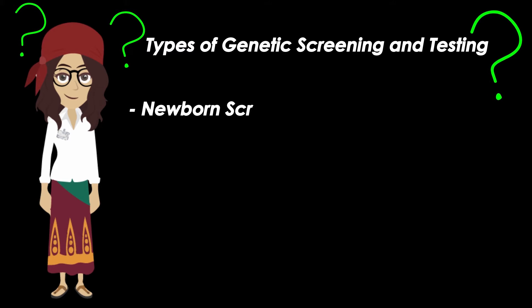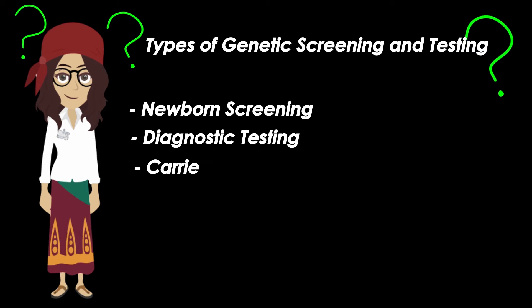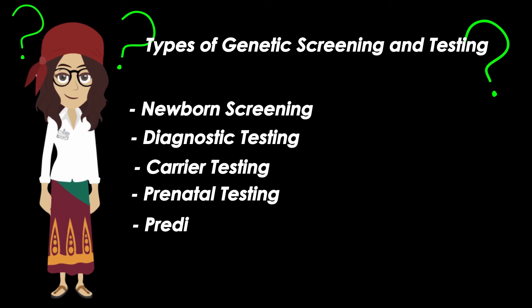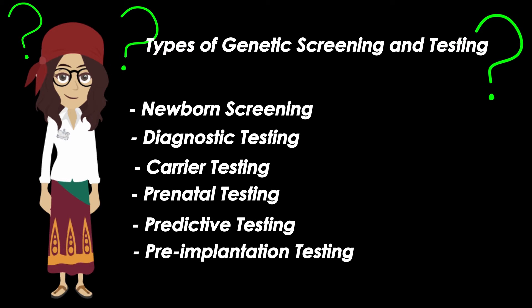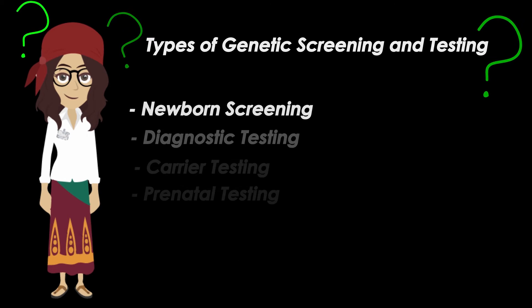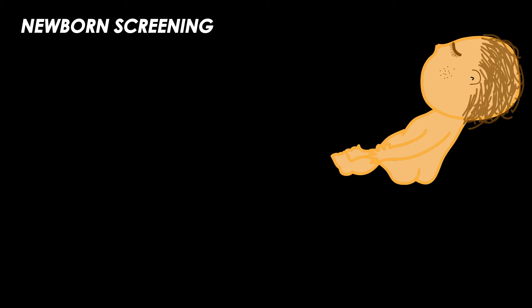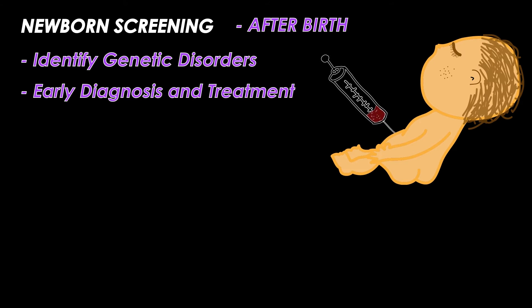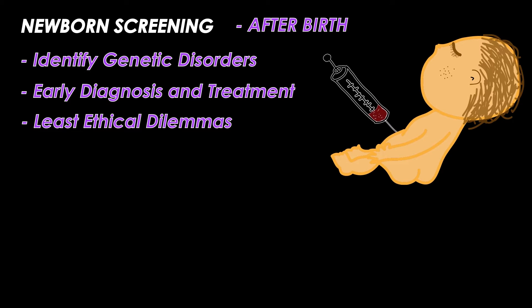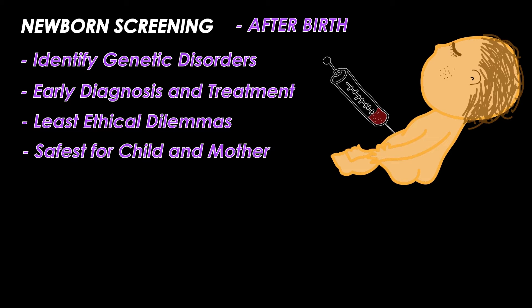There are different kinds of tests available: newborn screening, diagnostic testing, carrier testing, prenatal testing, and pre-implantation testing. Each one fulfills a specific purpose with different ethical implications. Newborn screening can take place after a child's birth to identify any genetic disorders that can be treated early in life. This is the option with the least ethical dilemmas and the safest for the child and parent.